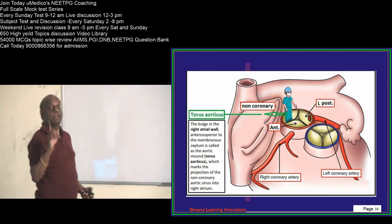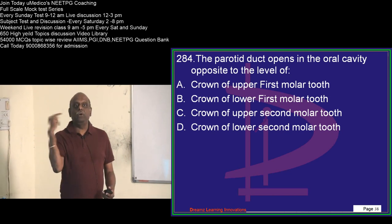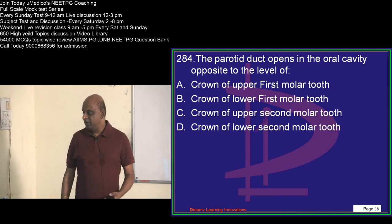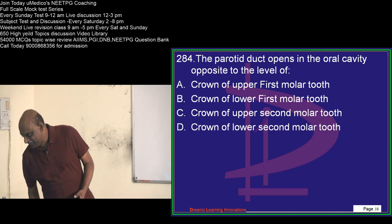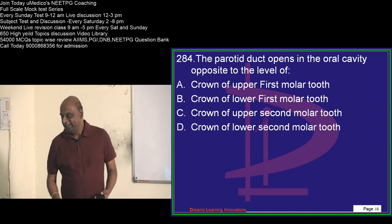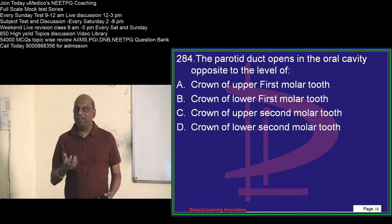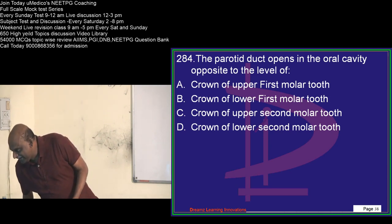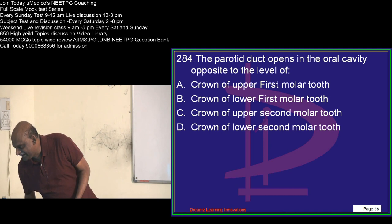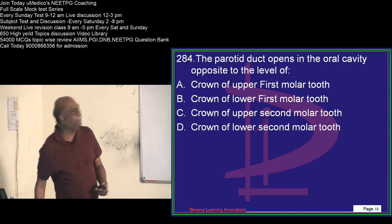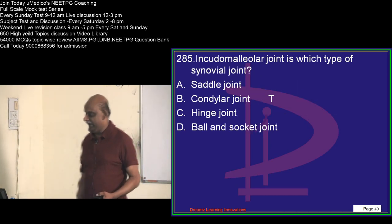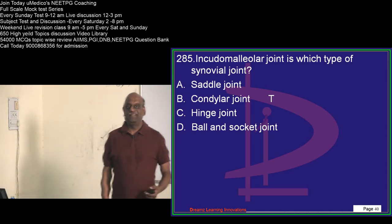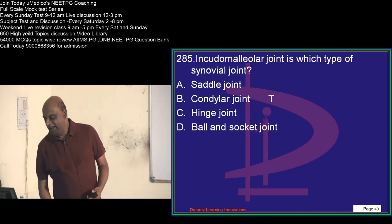Torus aorticus is related to the right coronary — please don't forget. Where does the parotid duct open? That is an absolutely easy question. If you are shooting this wrong, your prognosis is grade 4. Everyone says C. Somebody is saying B, but the answer is the upper second molar tooth — opposite that, the parotid duct opens.